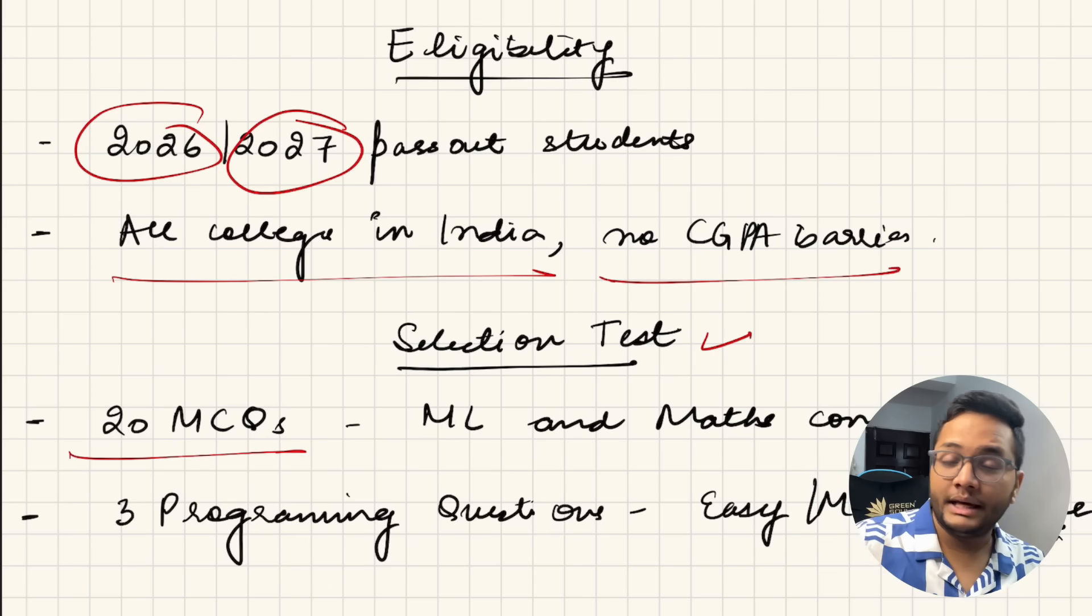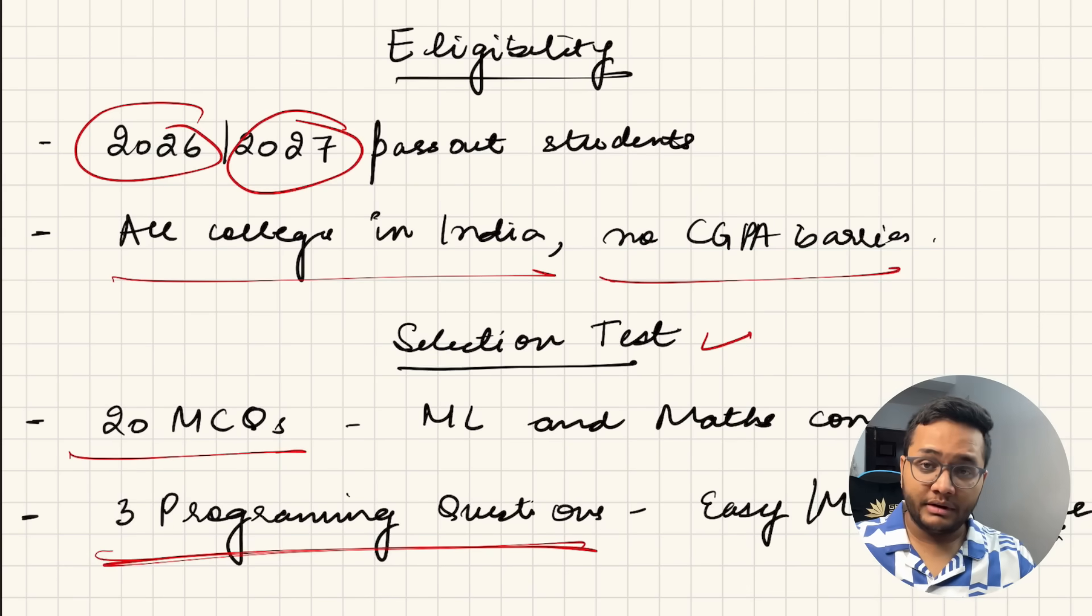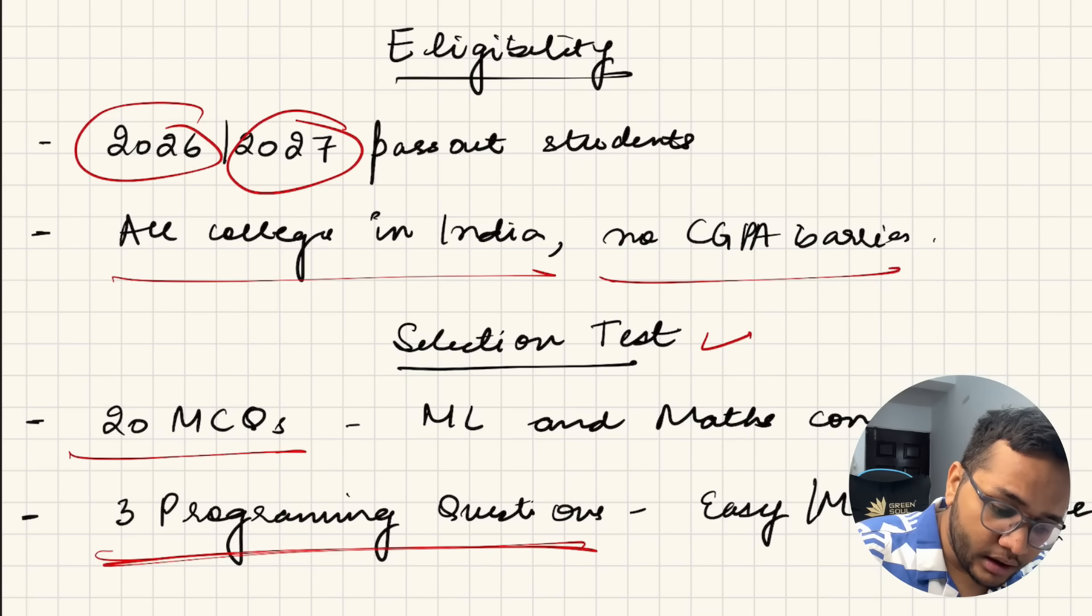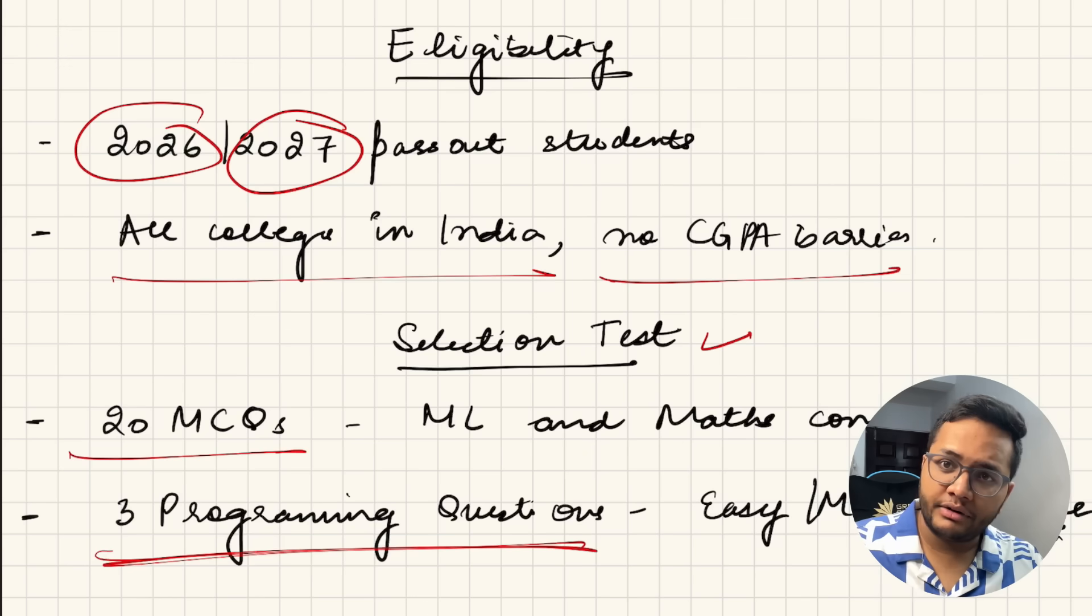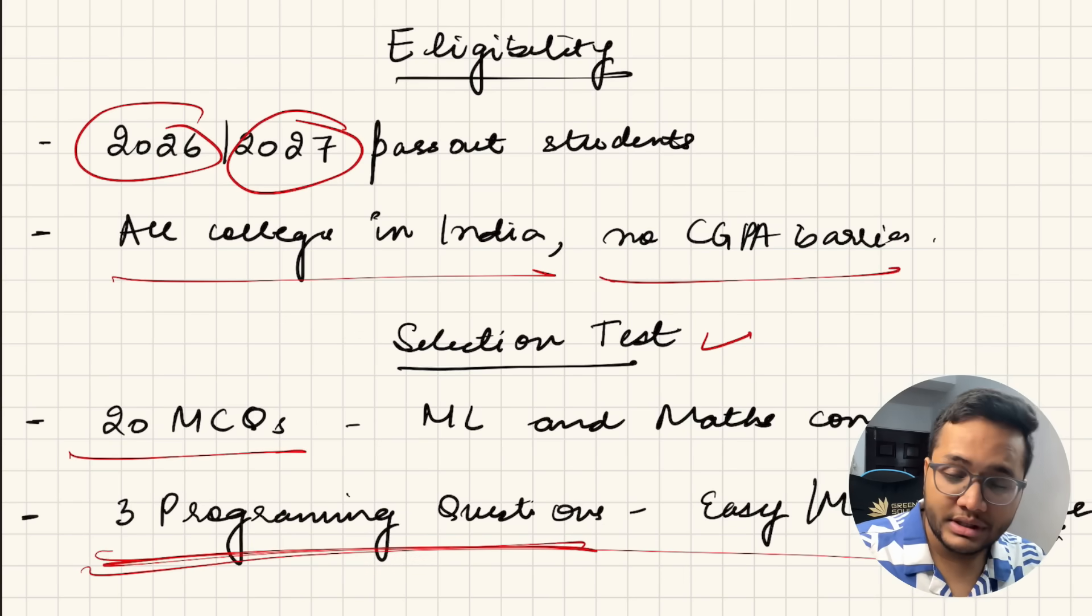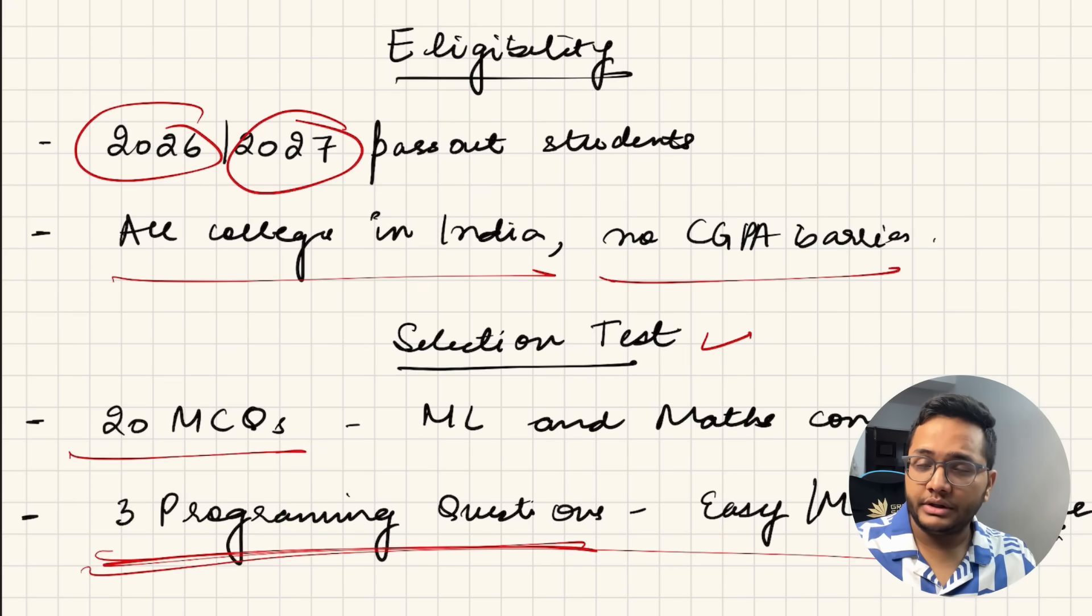Selection test: The procedure is like you would be getting 20 MCQs - 20 MCQs would be based upon machine learning as well as mathematics concepts - and three programming questions. Three programming questions, easy to medium level LeetCode questions ho sakte hain. Because this test this time is being conducted by a different platform, last time the previous 3-4 years it was being conducted by a different platform. So this is something that you need to take care because programming questions kisi bhi type ke aa sakte hain. I'll share some of the previous questions on my Telegram group, which link is in the description, or you can search it on Telegram also by the name of Arsh Goyal YouTube.